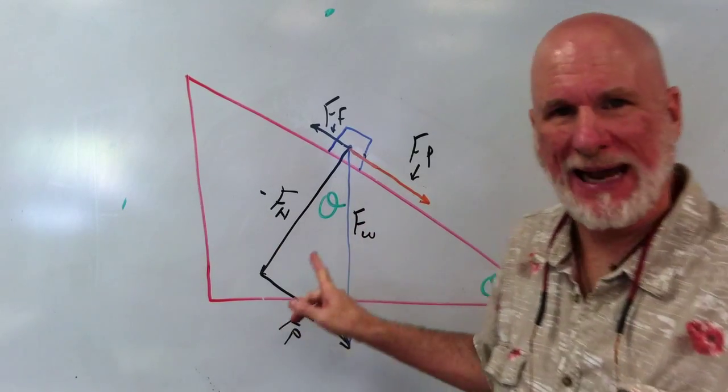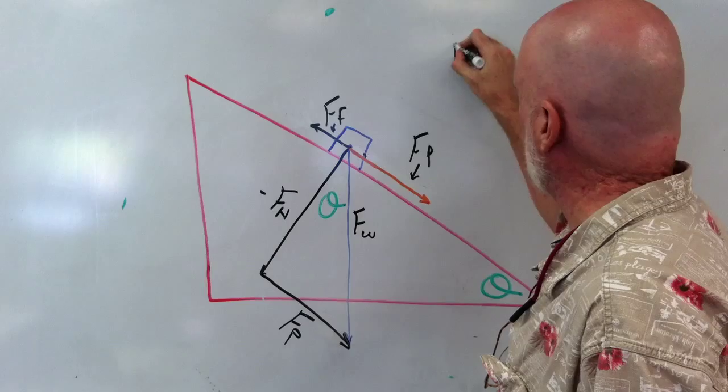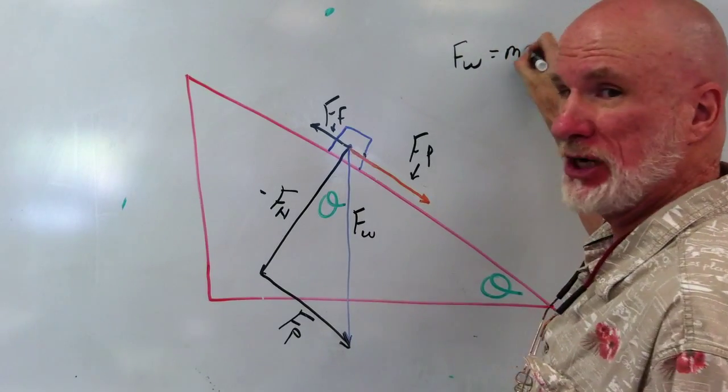Fw is your weight. So Fw equals mg. That's weight.